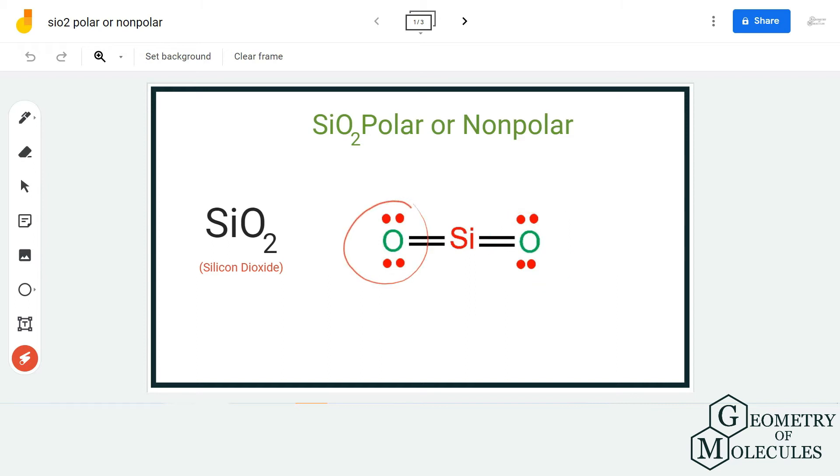and two oxygen atoms. A silicon atom forms double bonds with two oxygen atoms over here, and the molecular geometry is also quite simple because it is linear. So even though oxygen is more